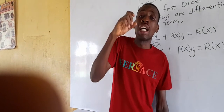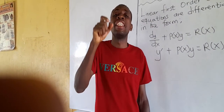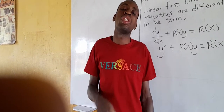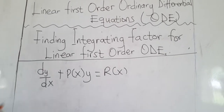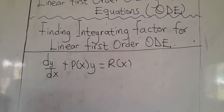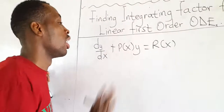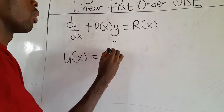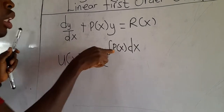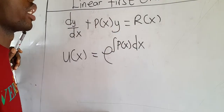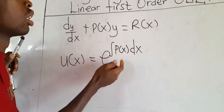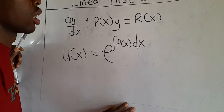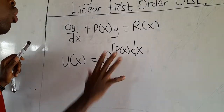Before you can solve a linear first order ordinary differential equation, you need to find the integrating factor. The integrating factor is given as u(x) = e to the exponent of the integral of P(x) dx, where P(x) is the coefficient of the y term. So we just integrate the coefficient of y, and the result is the integrating factor.